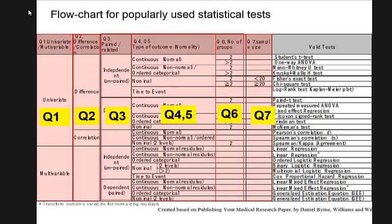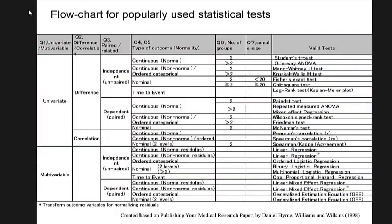If you answer these seven questions, they will lead you to the right statistics. The seven questions are: (1) univariate or multivariable? (2) Are you looking at difference or correlation? (3) Is the data paired? (4) What is the type of outcome — binary, continuous? (5) Is it normally distributed or not? (6) How many groups are you comparing? (7) What is the sample size?